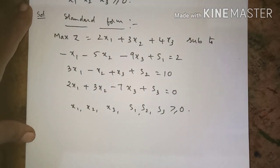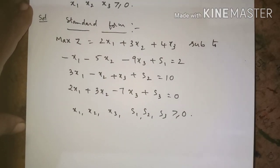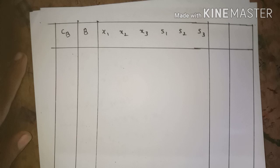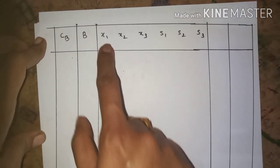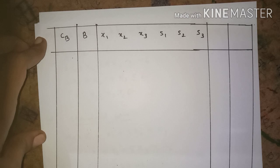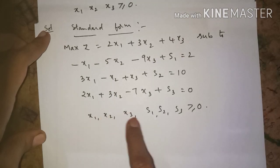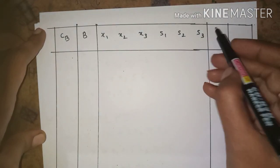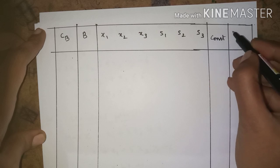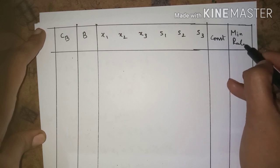After that, we start the simplex table. The first column is for cb, the second column is for basic variables, and the third section is the body of the simplex table. In our problem we have six variables: x1, x2, x3, s1, s2, s3. The next column is for the constant term, and the last column is for the minimum ratio.